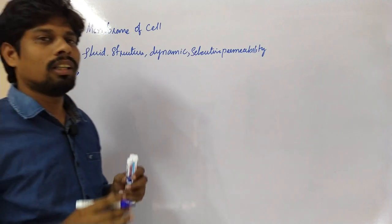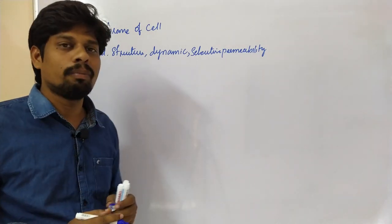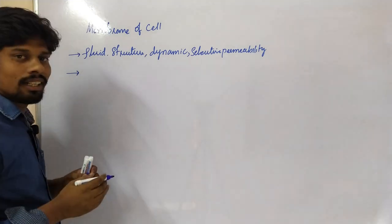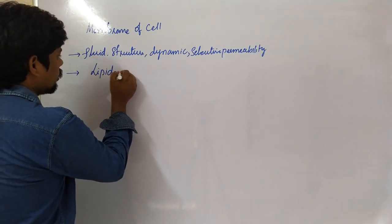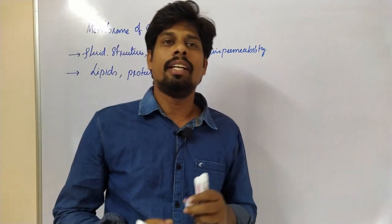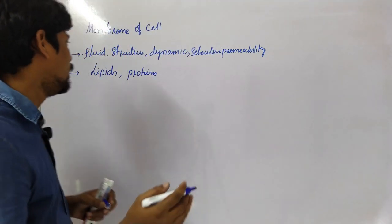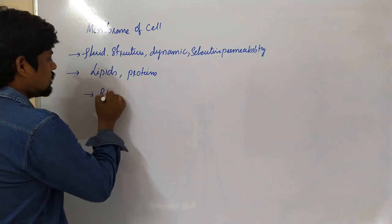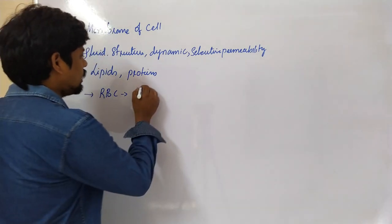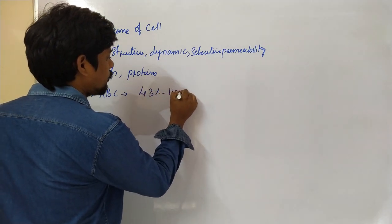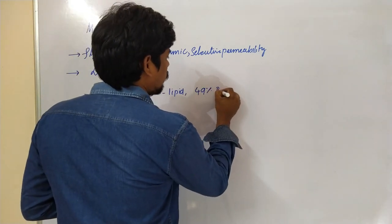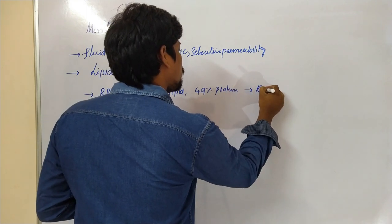All animal cells and plant cells contain a similar type of plasma membrane, but these plasma membranes majorly contain lipids and proteins. The RBC cell is a model for the plasma membrane — it contains 43% lipid and 49% protein, with the rest being carbohydrates and other small amounts.